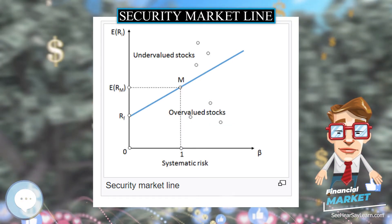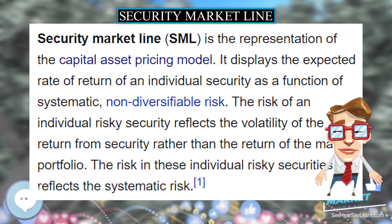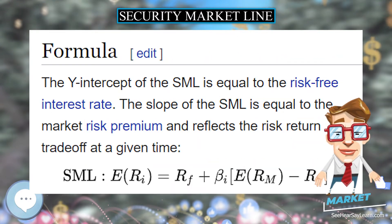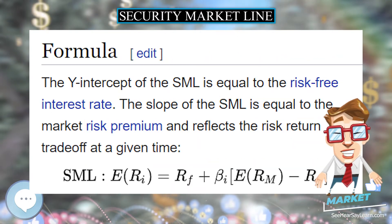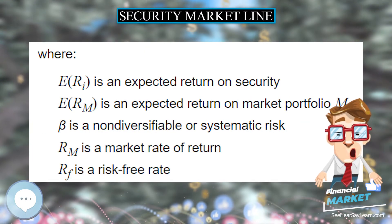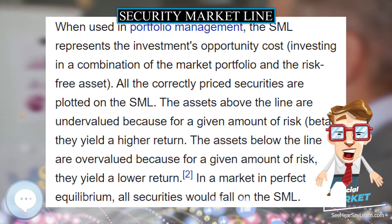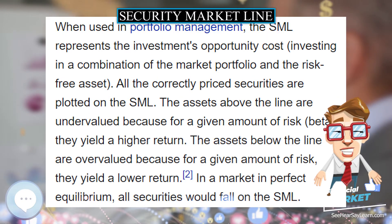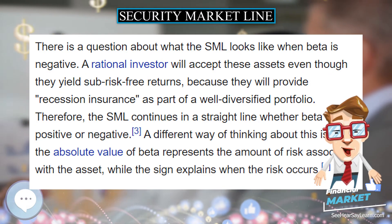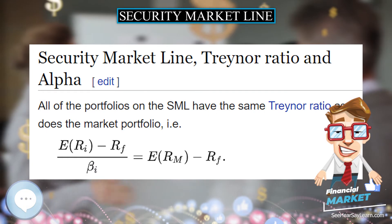When beta is negative, a rational investor will still accept these assets even though they yield sub-risk-free returns, because they provide recession insurance as part of a well-diversified portfolio. Therefore, the SML continues in a straight line whether beta is positive or negative. The absolute value of beta represents the amount of risk associated with the asset, while the sign explains when the risk occurs.